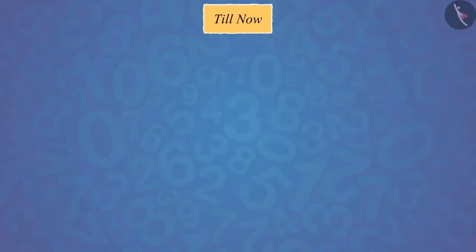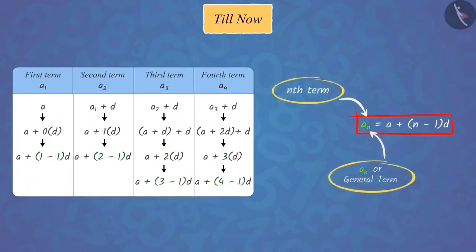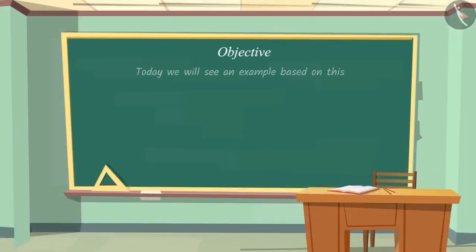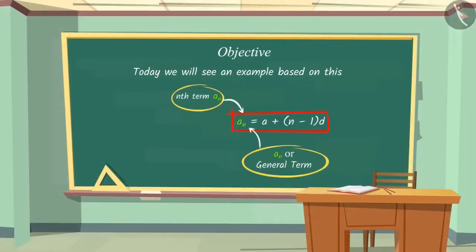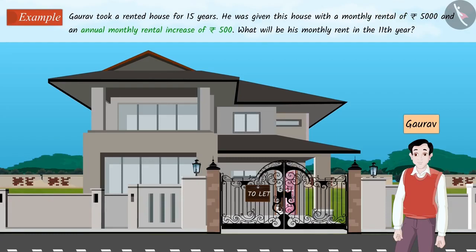In our previous video, we learned how to find the nth term of an arithmetic progression. Today, we will see an example based on this. Gaurav took a rented house for 15 years. He was given this house with a monthly rental of Rs. 5,000 and an annual monthly rental increase of Rs. 500. What will be his monthly rent in the 11th year?